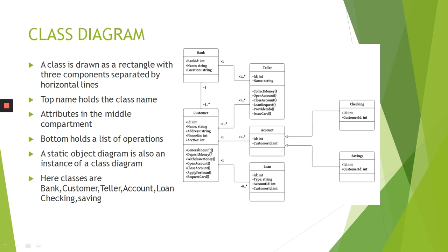The operations the customer can perform are: general enquiry, deposit money, withdraw money, open an account, close an account, apply for loan, and request card. So these are all the operations the customer can do, represented as a class diagram. There are many classes for a bank: customer, teller, account, loan, checking and saving. These are all the set of classes, and here we are representing the relationships between one class and another.